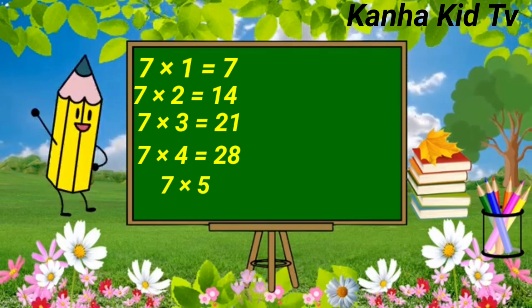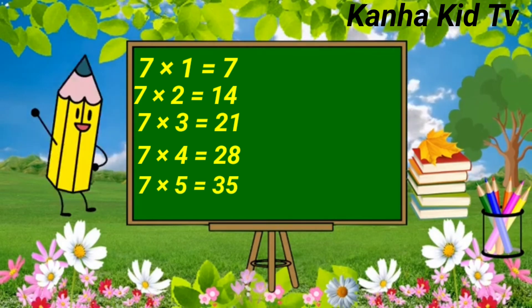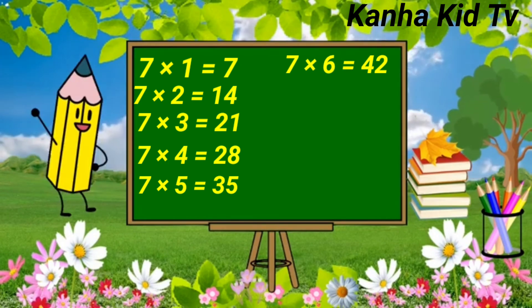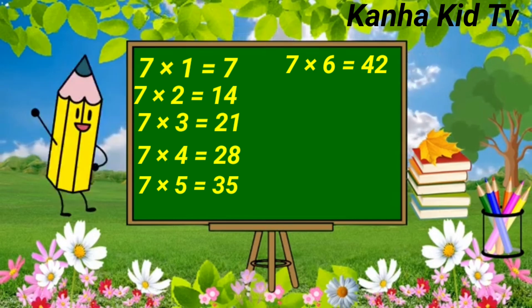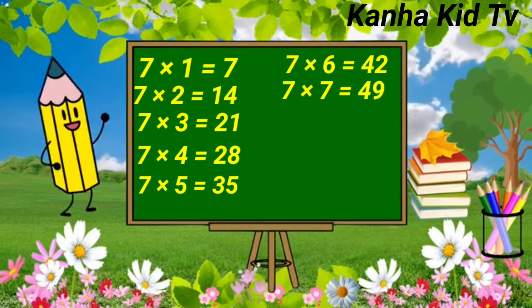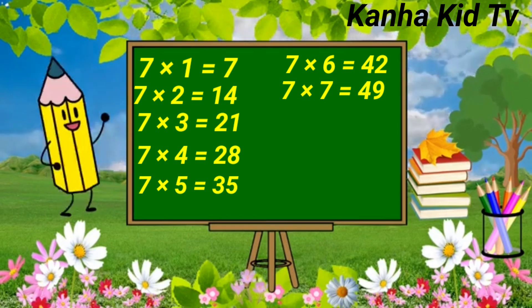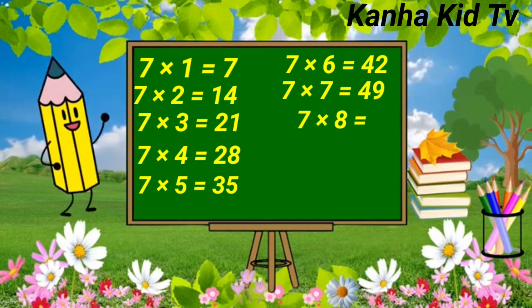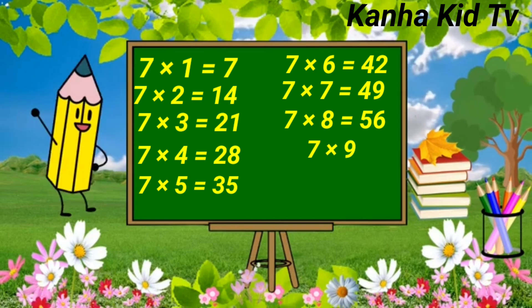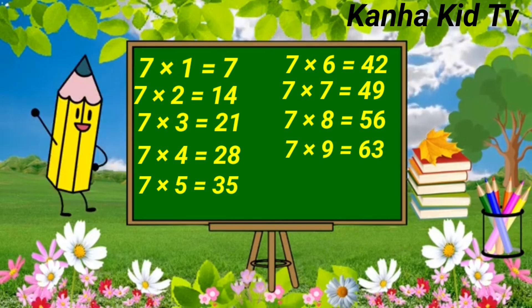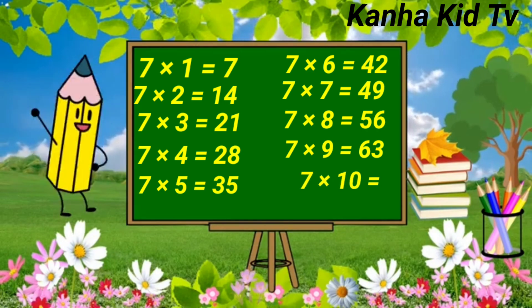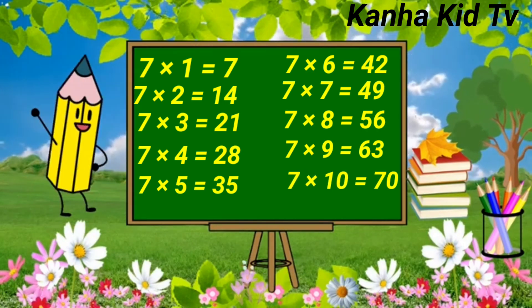7 fives a 35. 7 sixes a 42. 7 sevens a 49. 7 eights a 56. 7 nines a 63. 7 tens a 70.